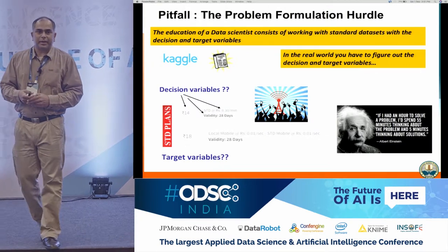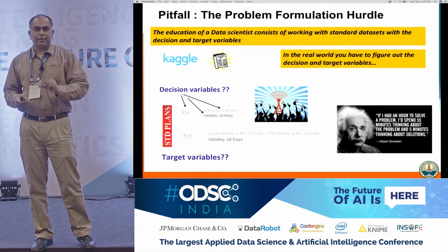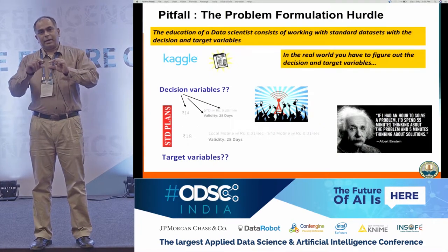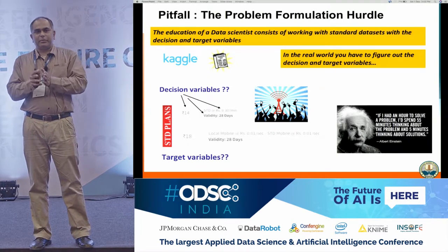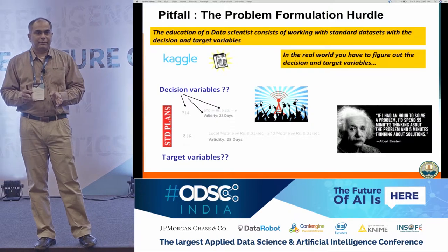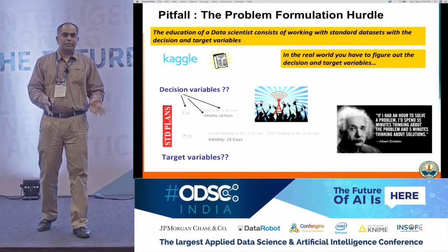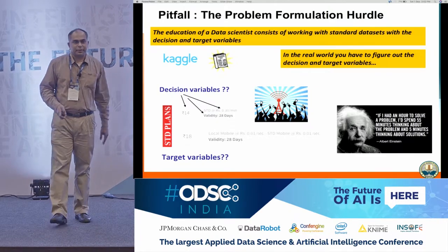We had to do an experimental design. We had to look at it segment-wise. Within each segment, we decided we'd do an A-B test — give the offer to some customers, not to others. Using that A-B test, we could measure actual revenue impact.